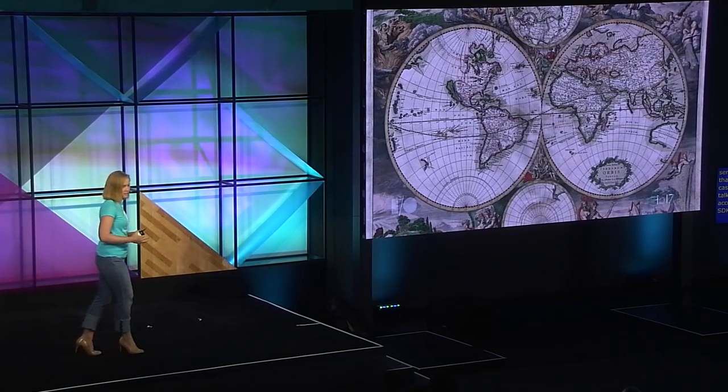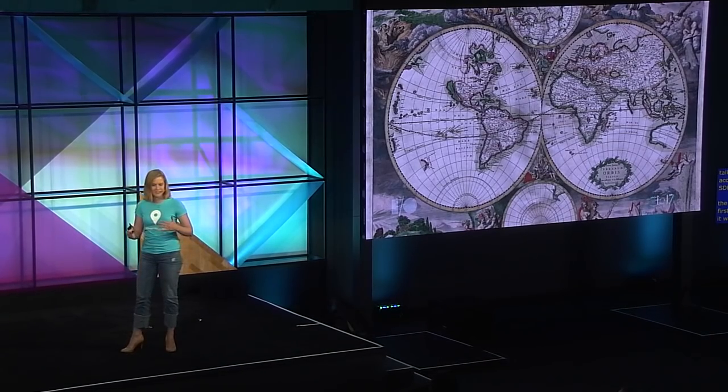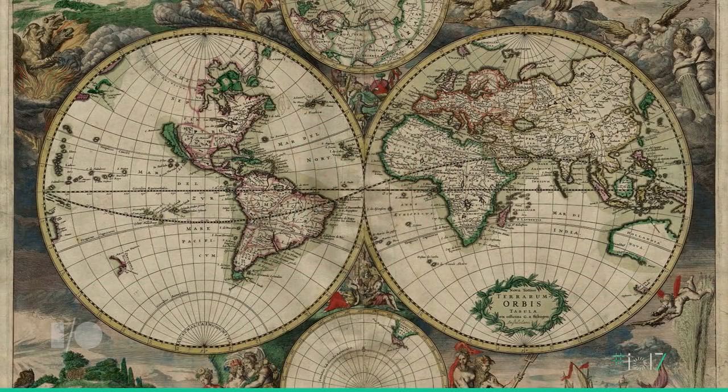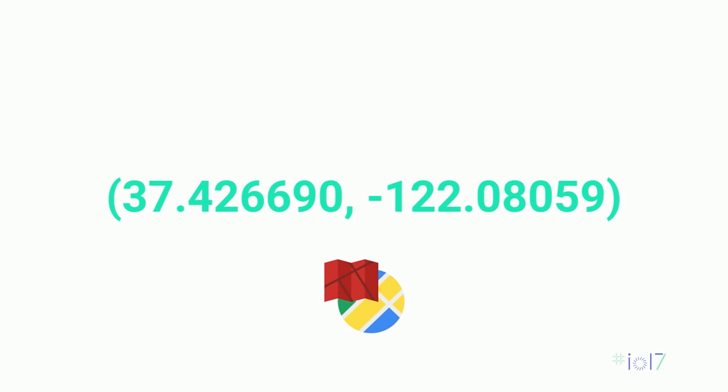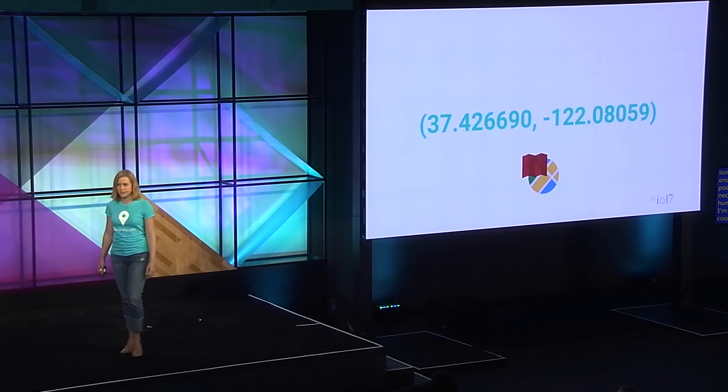Diving into that location stack: when we first started mapping the world, it was largely about charting courses. A latitude, a longitude, and some math was usually enough to get from point A to point B. But this isn't necessarily the best way that we as humans understand the world. Here's a set of coordinates — 37.4-something degrees latitude, negative 122.1 degrees longitude — and my guess is upon first seeing this, you don't automatically know where it is. It's certainly useful for computers to plot on a map, but it's not how humans think.